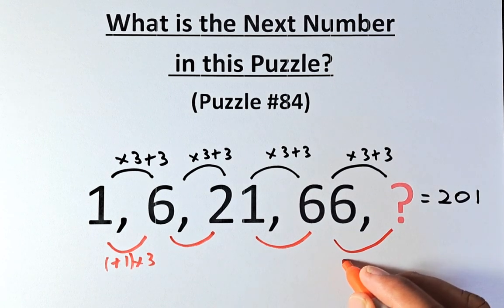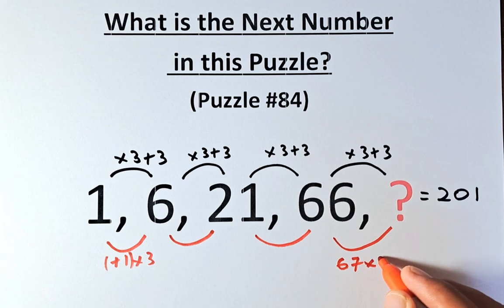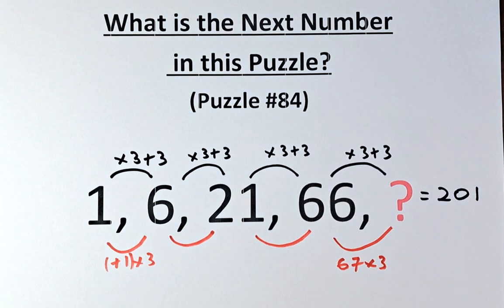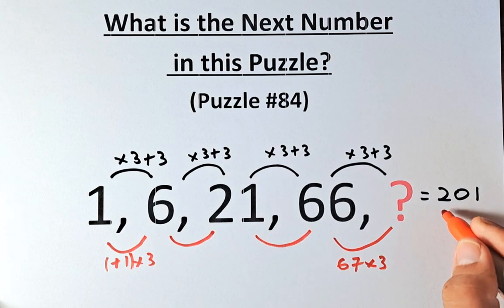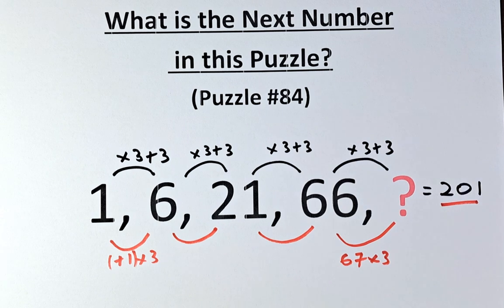From 66 to the question mark, 66 plus 1 is 67, and then we multiply by 3. 67 multiplied by 3, and the answer is 201.